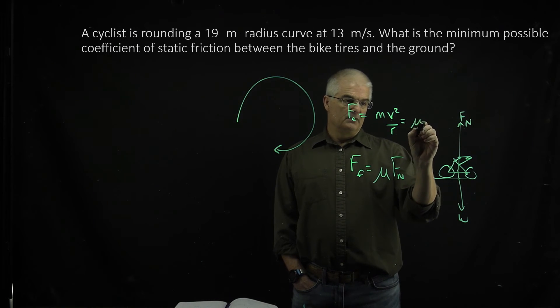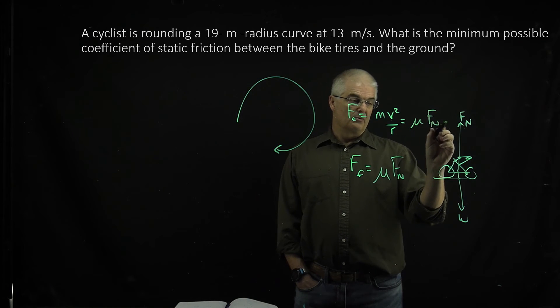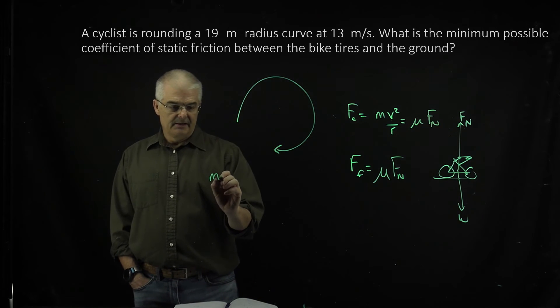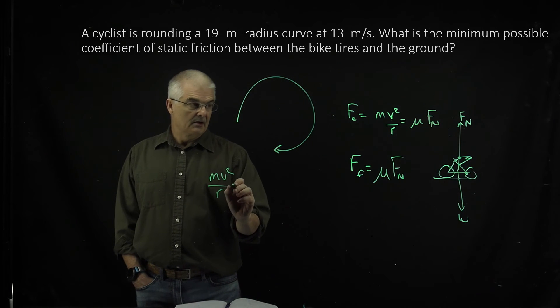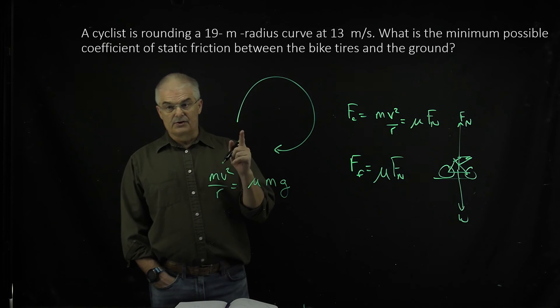So you can say this is equal to mu times the normal force. But the normal force, you can basically say mv squared over r is equal to mu times mg.